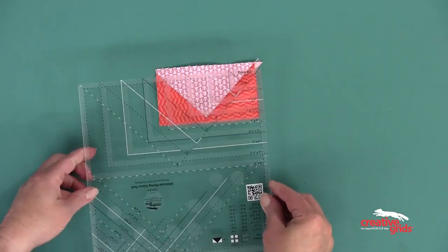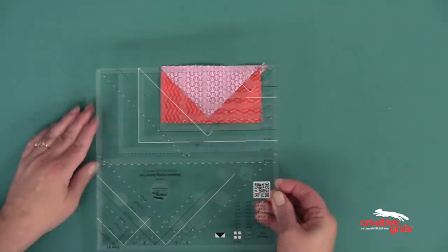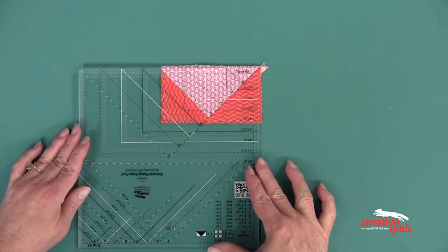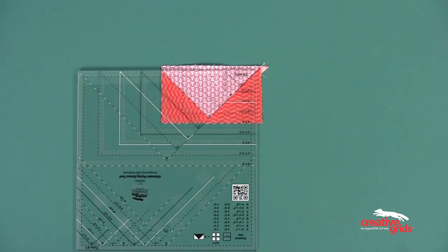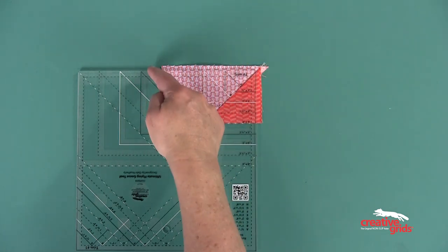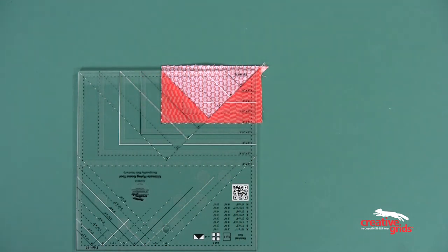Rotate the goose unit and the ruler 180 degrees. Align the trim two side of the tool and the appropriate size along the sides and the point of the goose. Trim the remaining two sides for a perfect flying geese unit. Repeat the process for the remaining three geese.